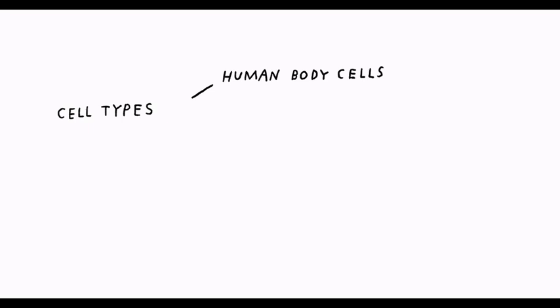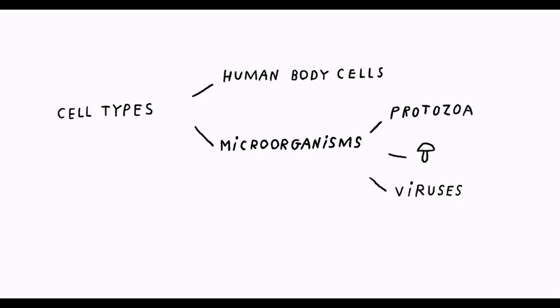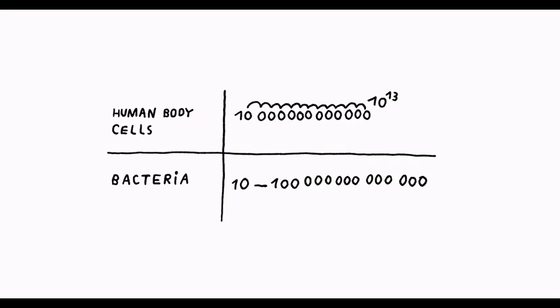These various types of cells include human body cells and different microorganisms, for example protozoa, fungi, viruses and bacteria. There are approximately 10 to the power of 13, that means 10 trillion human body cells and 10 to 100 trillion bacteria in our intestines.